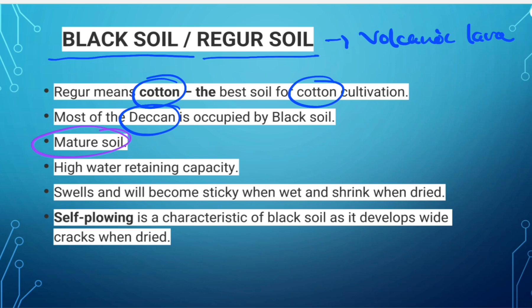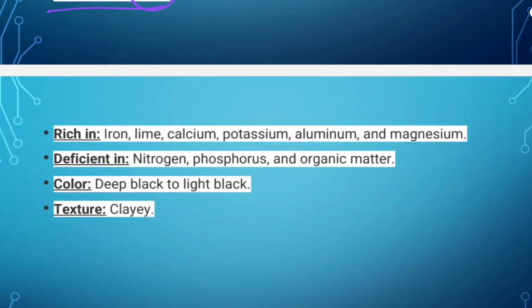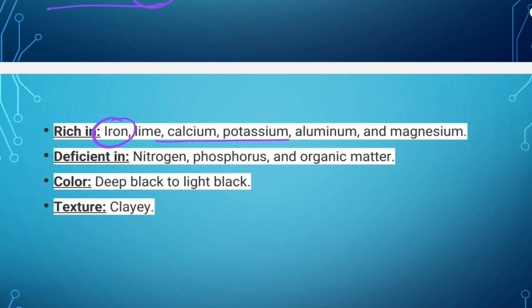Black soil has high water retaining capacity. It retains moisture for a very long time, helping crops — especially rain-fed ones — to sustain even during the dry season. The soil is known as self-ploughing, as it develops wide cracks when dried. It is rich in iron, lime, calcium, potassium, aluminum and magnesium, but poor in nitrogen, phosphorus and organic matter. Its color varies from deep black to light black and its texture is clay.